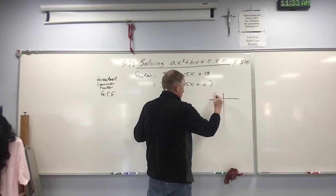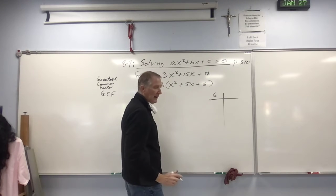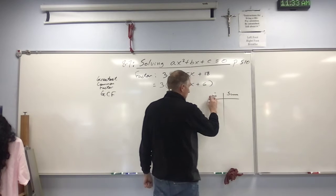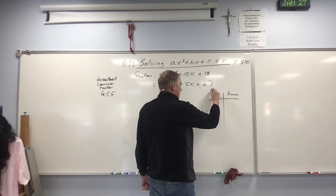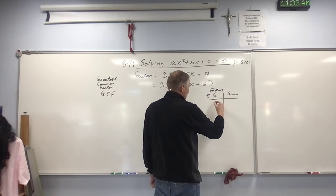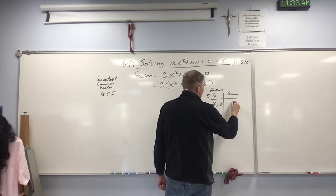So now, what are the factors of one times six, of six, that add up to five? This is the sum. What are the factors of six that add up to five? Well, that's pretty easy. It's going to be two and three, because they add up to five. Those are your factors.